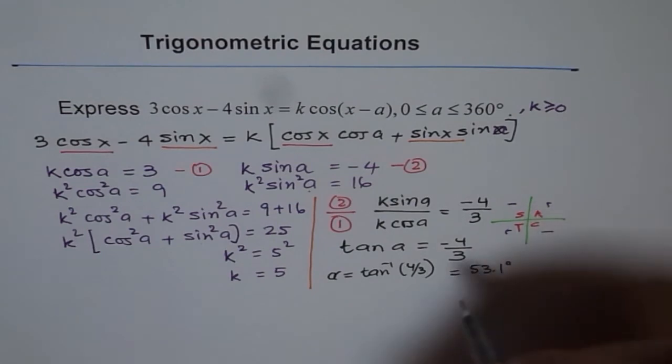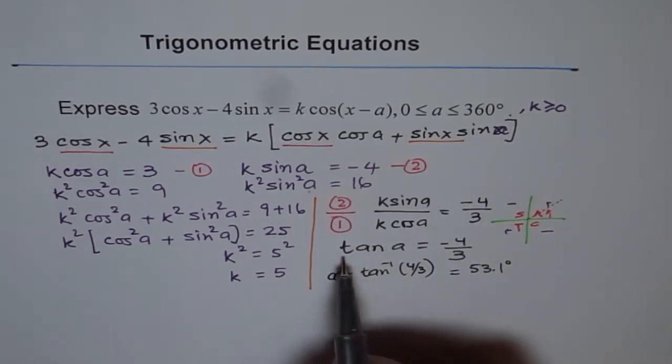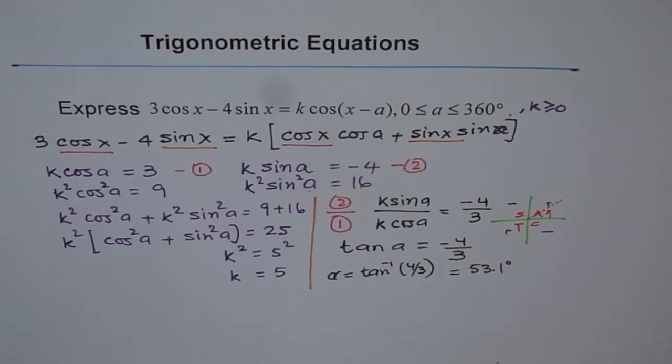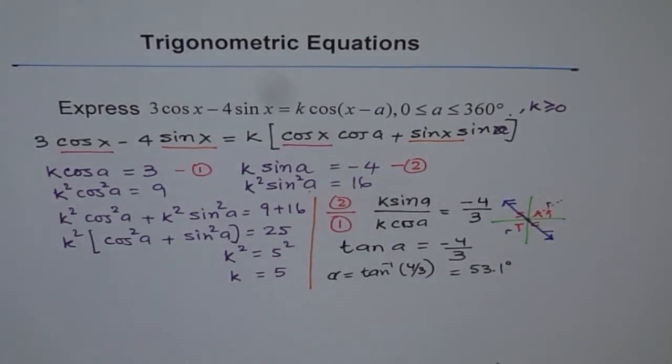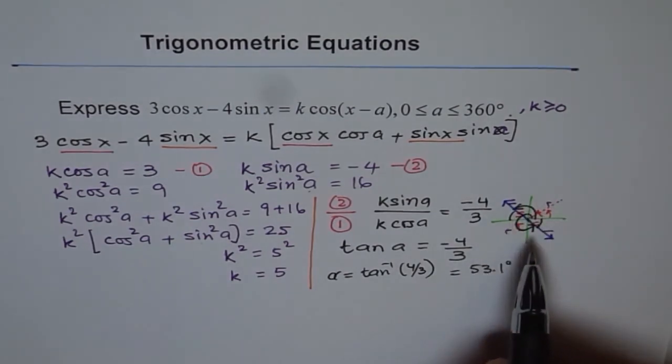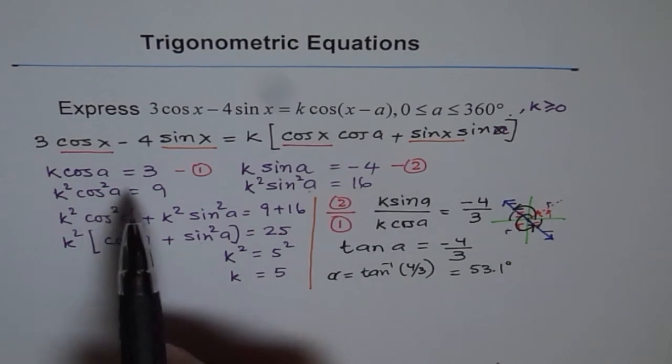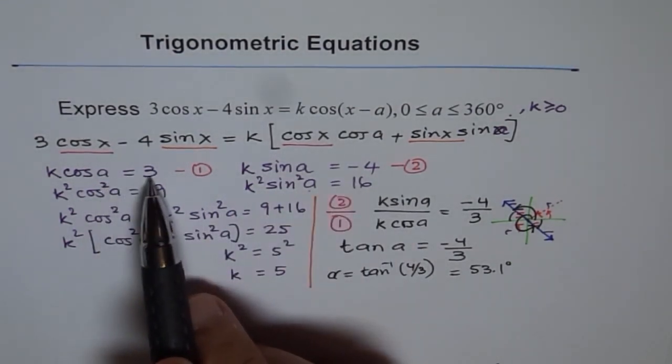From equations 1 and 2, we know that sine is negative and cosine is positive. That is the case only when we are in quadrant 4. It is not the case in quadrant 2, where sine should be positive. Since sine is negative, our answer lies in quadrant 4.